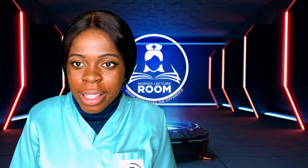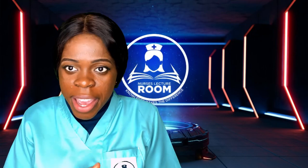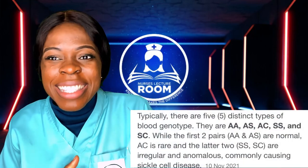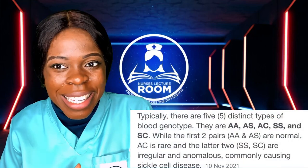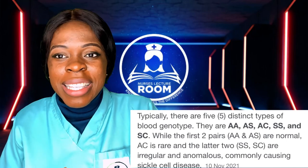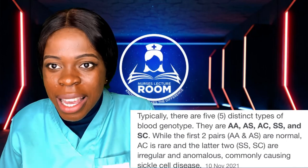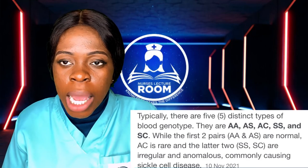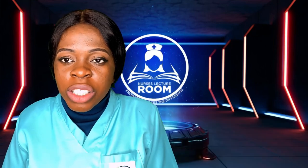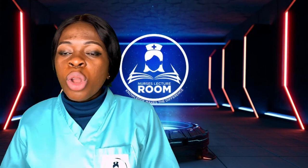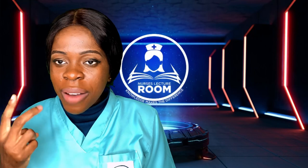There are different types of genotypes. We have AA, we have AS, and we have SC. For those that don't know, there is something called C. We have AC, we have SS, we have SC, and we have CC. These are the six different types of genotypes.